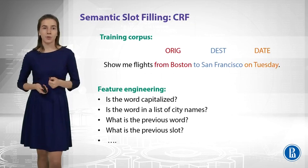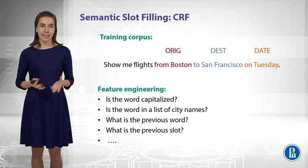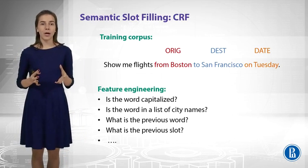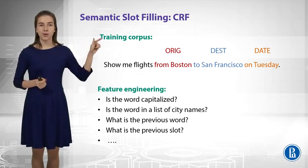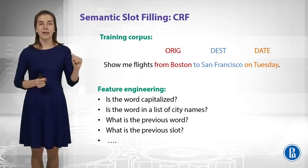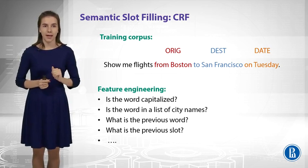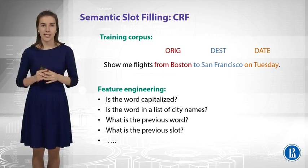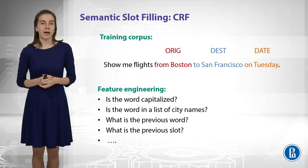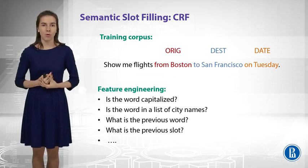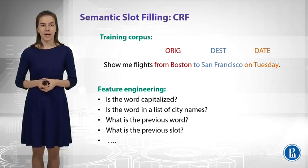Another approach would be to build a machine learning system. To do that, first of all, you need some training data — a corpus with some markup. You have a sequence of words, and you know that certain phrases have certain tags, like origin, destination, and date. After you have your training data, you need to do some feature engineering — you need to create features like, for example, whether the word is capitalized, or whether the word occurs in some list of cities, or something like that.